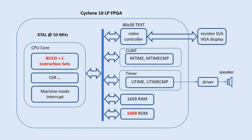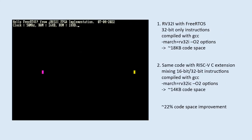No other change on the overall block diagram. I was able to use a smaller ROM for the demo code I had before. For the previous demo running with FreeRTOS, the code space was about 18 kilobytes. By adding the C extension and recompiling the source code with the compressed instruction option, I got about 14 kilobytes of code space for the same source code. That's about 22% code space savings — not the 30% I read somewhere, but it'll have to be good enough for now.